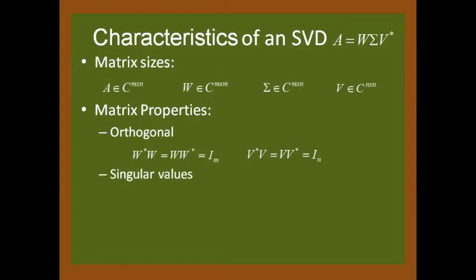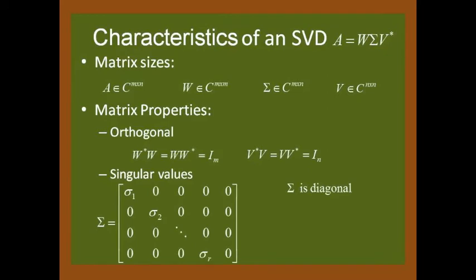And for the singular values, one can quickly note that the matrix sigma is diagonal with extra rows or columns of zeros, depending on the size of A. Also, the singular values are equal to the square root of the eigenvalues of either A adjoint A or A A adjoint. Finally, the singular values can be ordered from greatest to least.